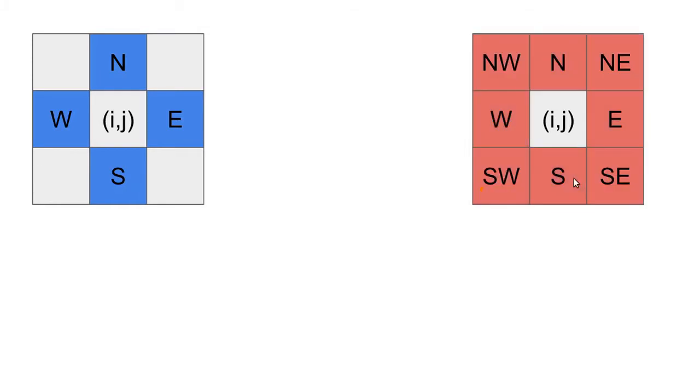These both have names that's worth knowing. It makes it easier to talk about them. This one is called the von Neumann neighborhood, and this one is called the Moore neighborhood. So you'll see those sometimes in grid-based simulations of things. We can use either of these in this simulation. I'm going to be using the von Neumann neighborhood in the simulations that you see.